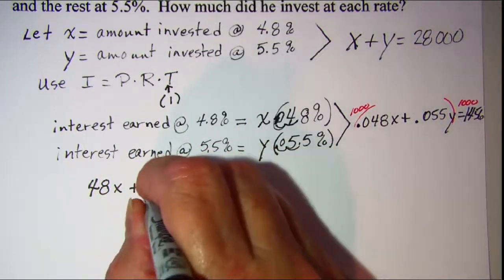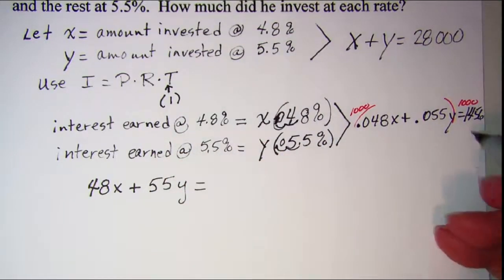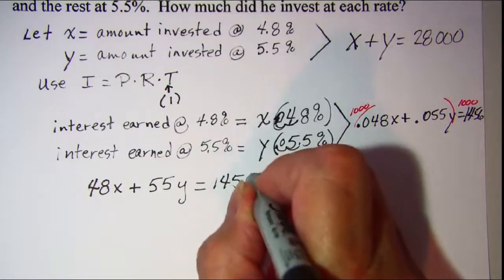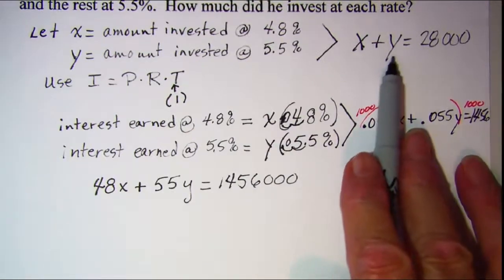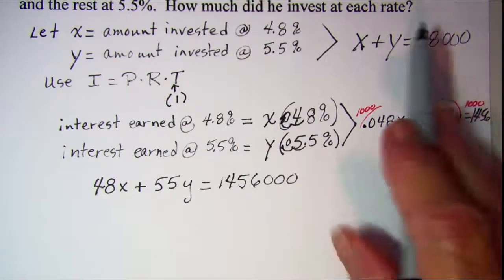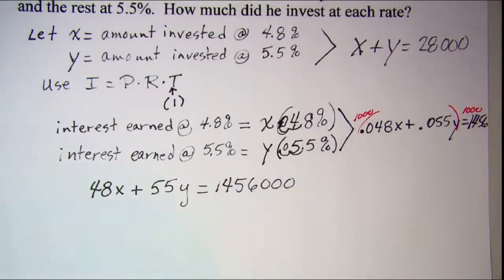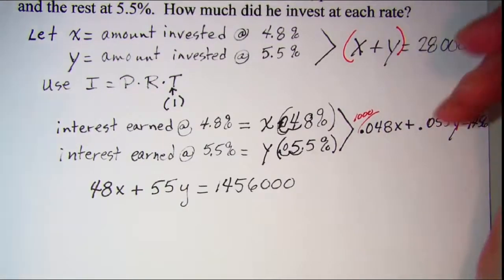And then this one I'm going to use elimination. I'll multiply every term here by negative 48.